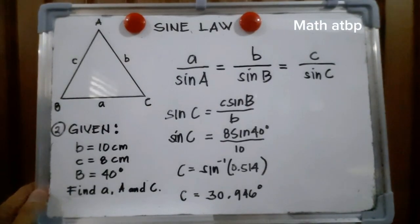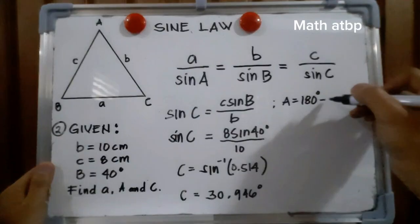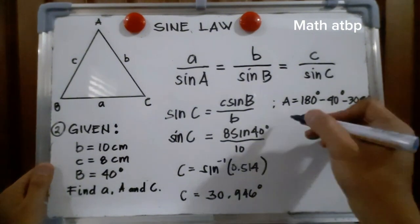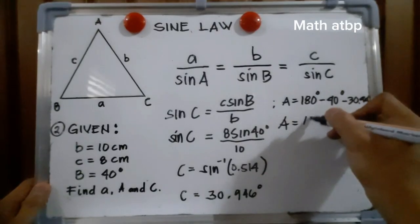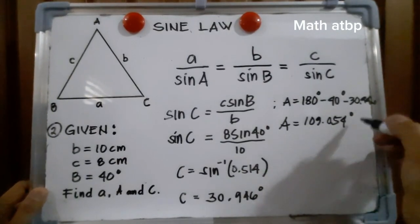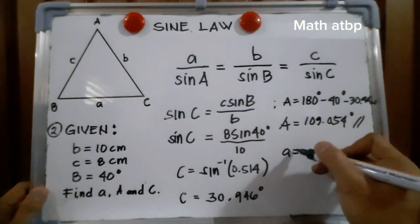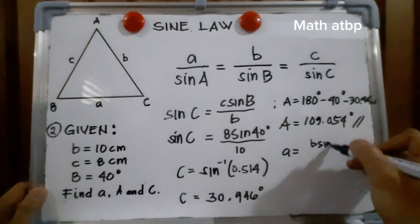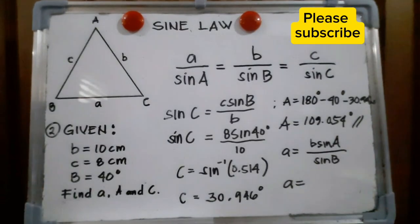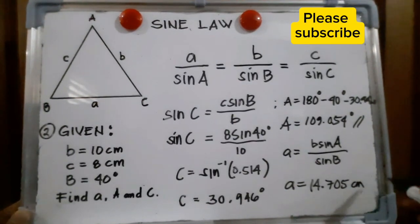That is angle C. Now let us solve for angle A: A equals 180 degrees minus 40 degrees minus 30.946 degrees, giving angle A equal to 109.054 degrees. Finally, we solve for side A. Side A equals B times sine of A divided by sine of B, and side A is equal to 14.705 centimeters. That is our side A.